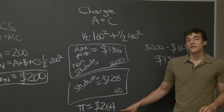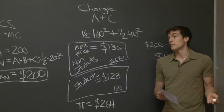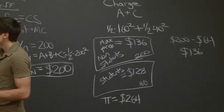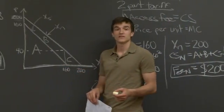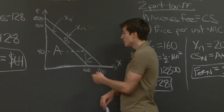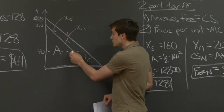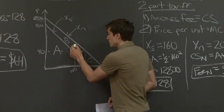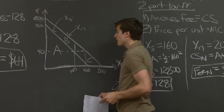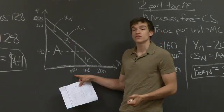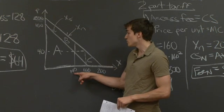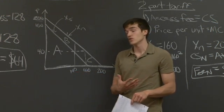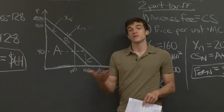The last part of this problem gives another scenario: instead of a student bundle with 160 songs, what if the student bundle only has 140 songs? When designing this bundle, prices must be set so that only students want the 140-song bundle and only non-students want the 200-song bundle. The process is the same as before.